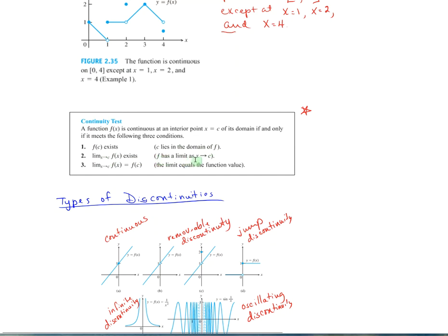It has a limit as x approaches c, and then those two things have to be equal. The limit equals the function value. Those are the items that it must meet to be continuous.